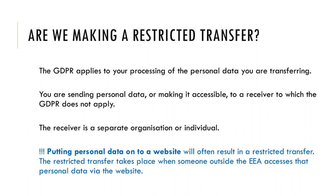You are making a restricted transfer if: first, the GDPR applies to your processing of personal data — the scope is set out in Article 2 (what is processing of personal data) and Article 3 (where the GDPR applies), and generally the GDPR applies if you are processing personal data in the EU; second, you are sending personal data or making it accessible to a receiver to which the GDPR does not apply, usually because they are located outside the EU; and third, the receiver is a separate organization or individual.